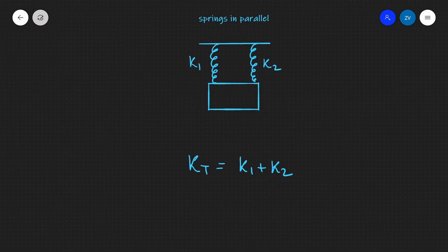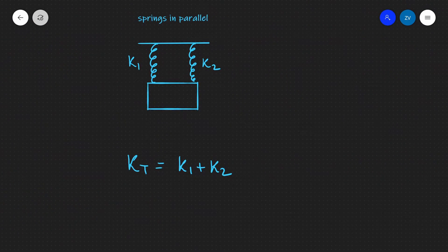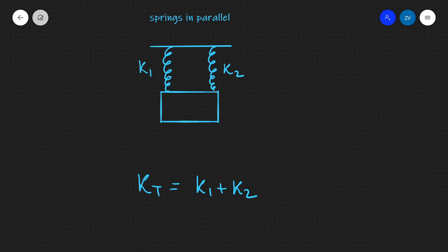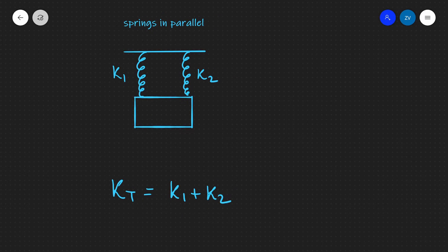Additionally, we have an equation for springs in parallel. If we have an object attached to two springs positioned in parallel, as shown in this figure, then the total spring constant k total is going to equal k1 plus k2. Notice that those two rules are completely the opposite in comparison to adding resistors in series and parallel.